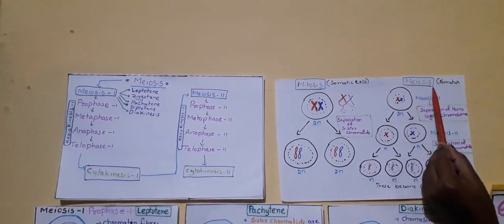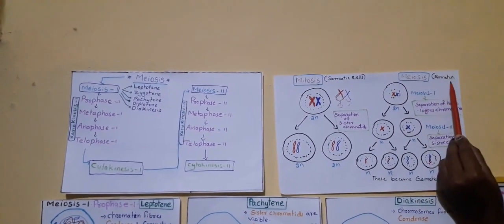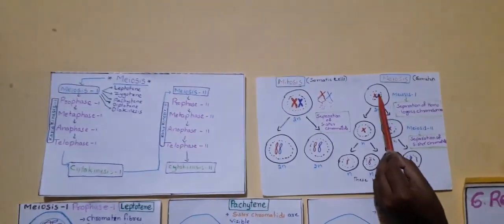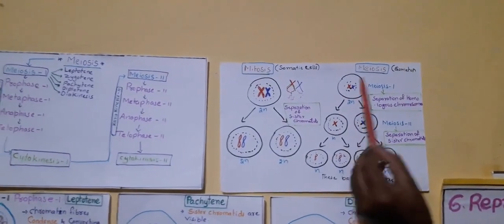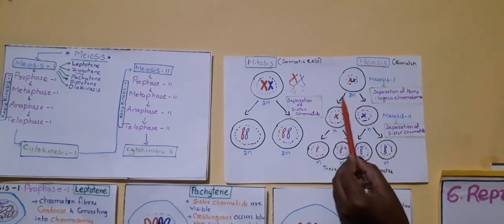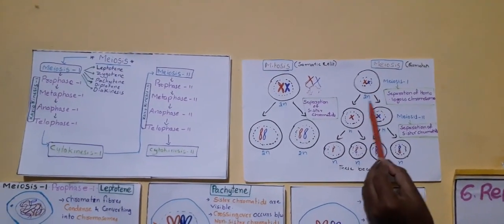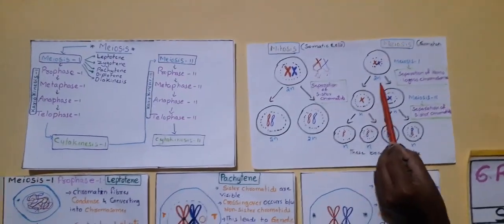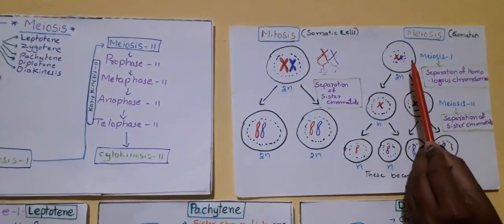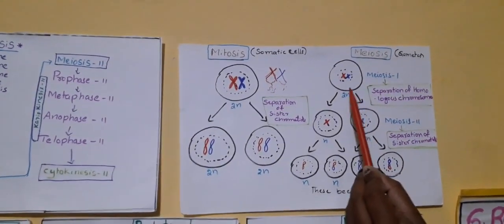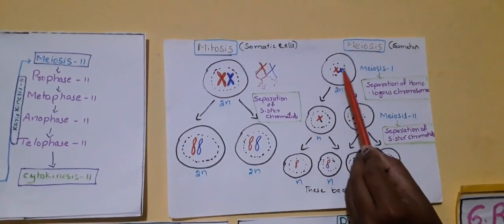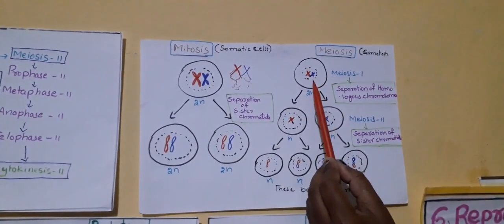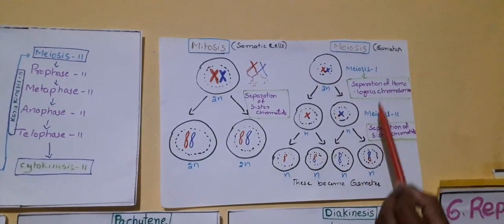Let us see what happens in meiosis. Meiosis takes place in gametes. Imagine a parent cell where chromosomes are arranging in pairs — these are called homologous chromosomes. This parent cell consists of two sets of chromosomes, so it is in the diploid state, represented as 2N. At first, these chromosomes make a duplicate copy of themselves and form sister chromatids. Meiosis is divided into two types: Meiosis 1 and Meiosis 2.